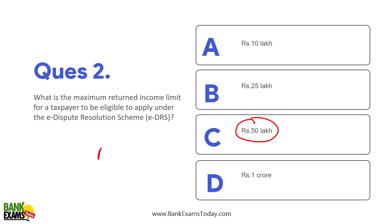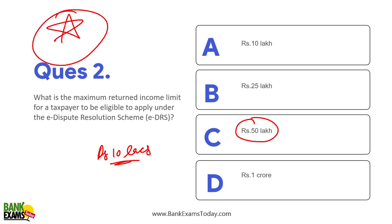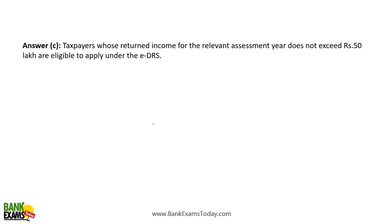The value of the dispute must be up to 10 lakh rupees. For example, if you paid tax of 5 lakhs but they are demanding 20 lakhs, that would not apply — the correction or variation must be less than 10 lakhs. In that case you can use EDRS, the E-Dispute Resolution Scheme. This question is very important for your exams. Remember: E-Dispute Resolution Scheme is for income tax, and applies where the variation is up to 10 lakh rupees.